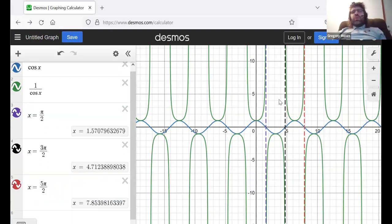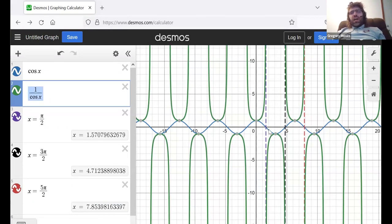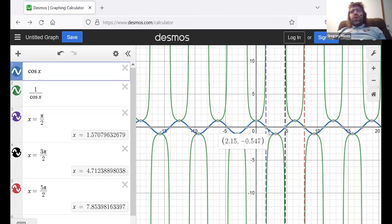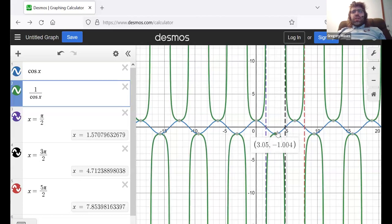What happens in between the vertical asymptotes? Well, the secant is one divided by the cosine. Look between these vertical asymptotes. The cosine is always negative, which means the secant is always negative. Here, the cosine is negative one. One divided by negative one is also negative one. So, the cosine and the secant touch.